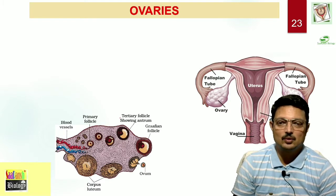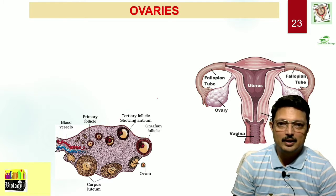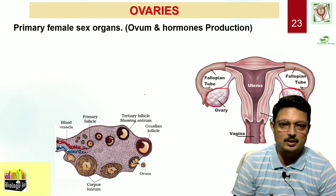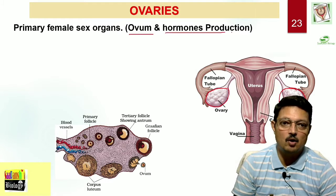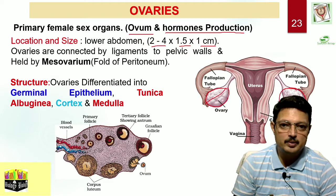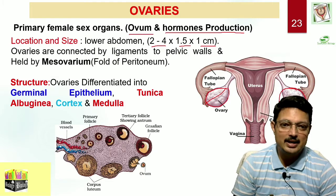The ovaries are the primary sex organ of the female. Each female is born with a pair of ovaries. The ovary has two functional roles: production of ovum (the female gamete) and production of female hormones — estrogen and progesterone. It is located in the lower abdomen, with a size of approximately 2–4 cm in length, 1.5 cm in width, and 1 cm in thickness. The ovaries are connected by ligaments to the pelvic walls and are held by a fold of peritoneum called mesovarium.